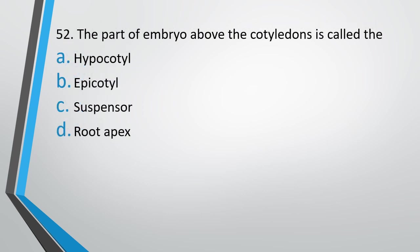Question number 52. The part of embryo above the cotyledon is called as: hypocotyl, epicotyl, suspensor, or root apex. The correct answer is option B — it is called the epicotyl.